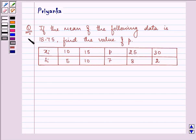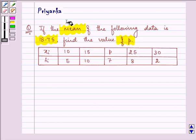Hello and how are you all today? The question says, if the mean of the following data is 18.75, find the value of P.